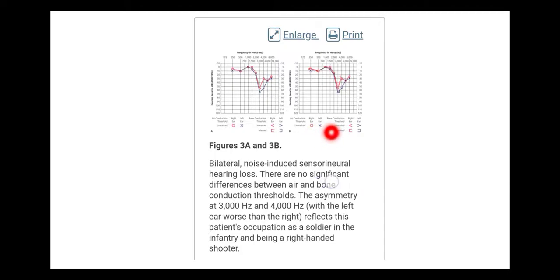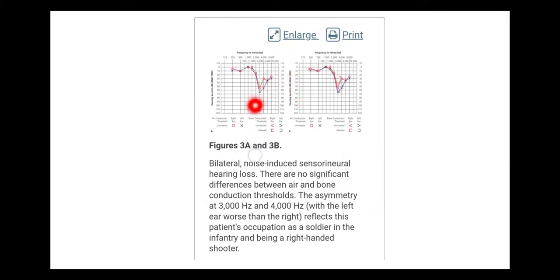Here we have bilateral noise-induced sensorineural hearing loss. Realize that sensorineural hearing loss for noise-induced usually shows a dip at 4k. There are no significant differences between air and bone conduction threshold - a significant difference requires a gap of at least 10 decibels. The asymmetry at 3000 and 4000 Hz with the left ear worse than the right reflects this patient's occupation as a soldier in the infantry and being a right-handed shooter.